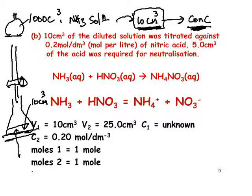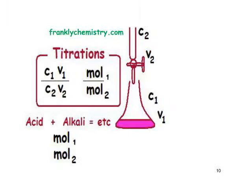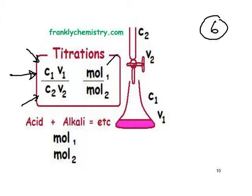We're going to work out the concentration of the ammonia present in this solution. In any titration there are six variables, represented by this formula: C1, V1, C2, V2, and the number of moles of chemicals 1 and 2 in the balanced equation — six variables in all. Typically you are given five of these variables and your job is to work out the sixth one — in this case, the concentration of the ammonia solution.